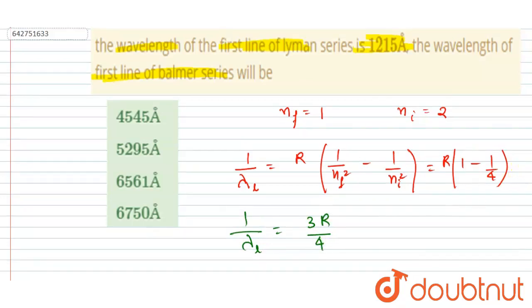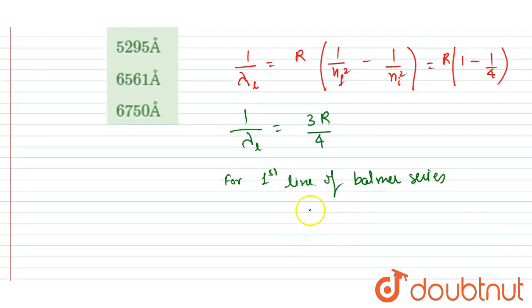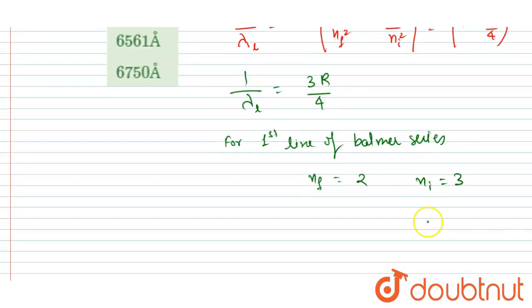If I talk about the first line of Balmer series, for the first line of Balmer series, n_final will be equal to 2 always. And n_initial, since this is the first line, n_initial will be equal to 3. So from 3 to 2, it will be the first line of the Balmer series.